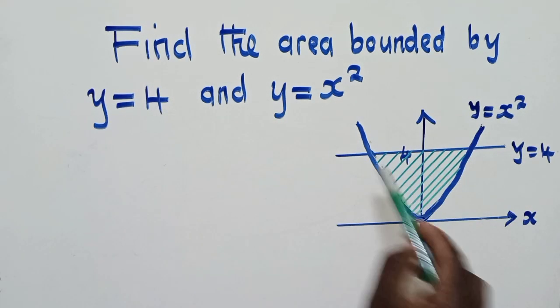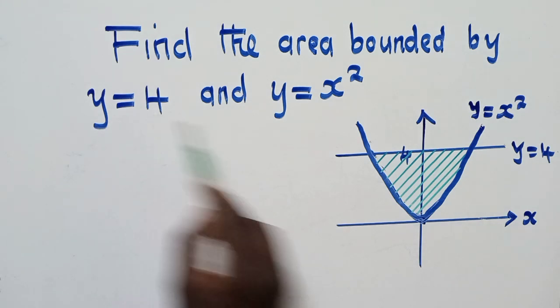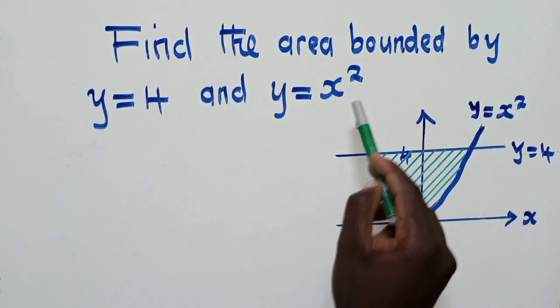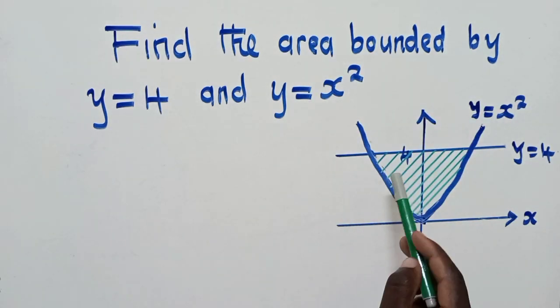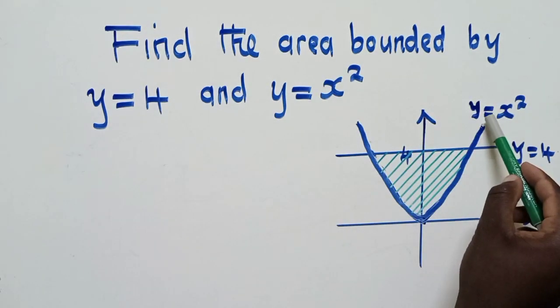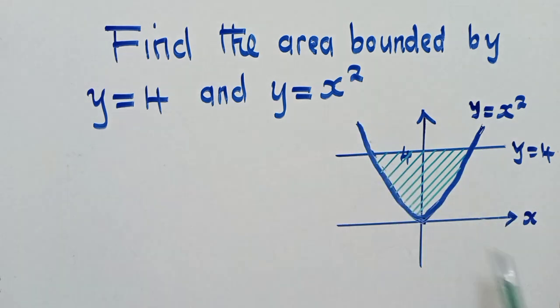You graph all these two equations. So this one, it's right here. Y is equal to 4. It's passing at 4 here. And this one is a quadratic equation, so it's supposed to go like that. It's passing at 0. So this is a 0 right here.